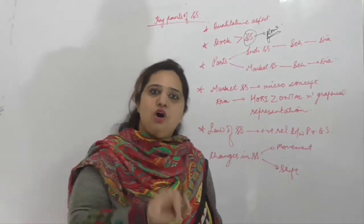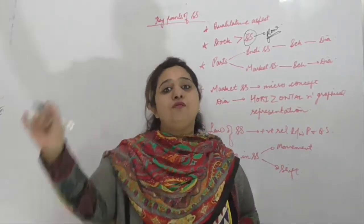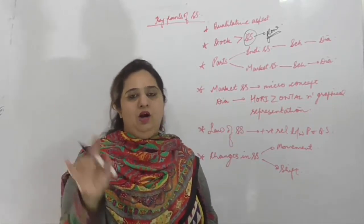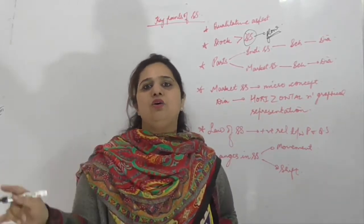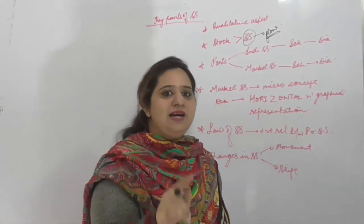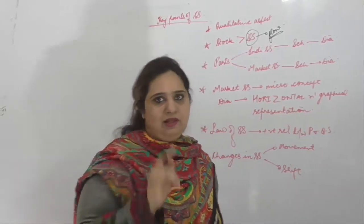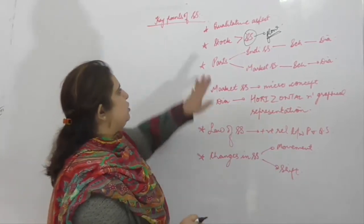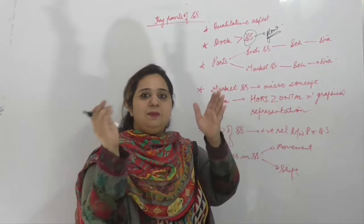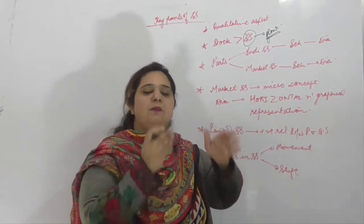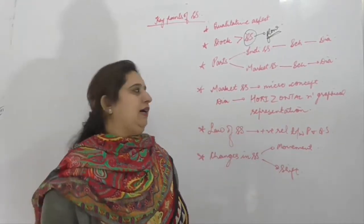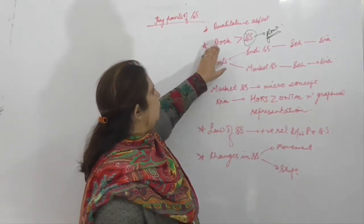Supply वो part है stock का जो a producer is offering for sale in the market — that is known as supply. और एक producer कब सामान को market में sale के लिए offer करता है? जब उसको सही price मिलता है। So remember: Stock बड़ा concept है, Supply छोटा concept है। Supply is a part of stock, and stock is a potential supply।